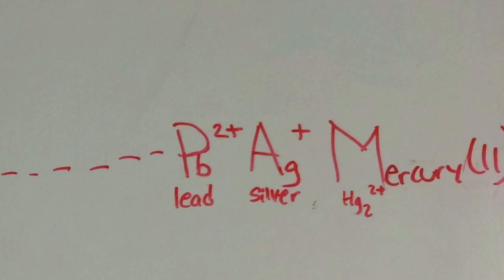except when the halogens are paired up with PAM. PAM stands for PB with a 2+, which is lead, AG plus, which is silver, and HG2 with a 2+, which is mercury.